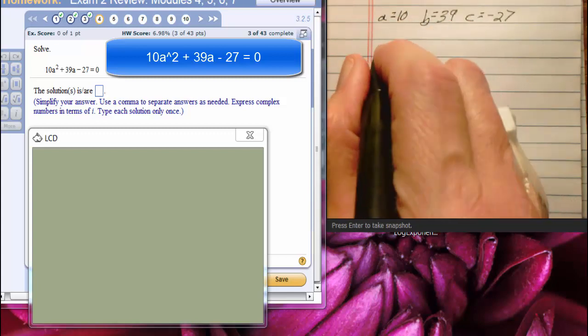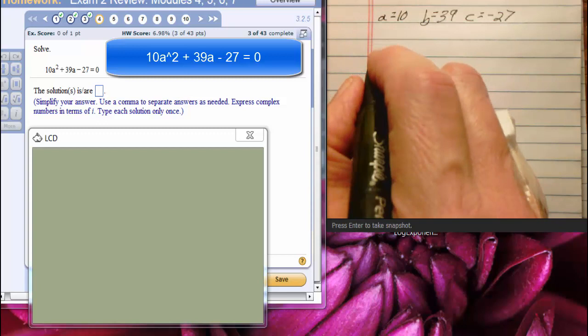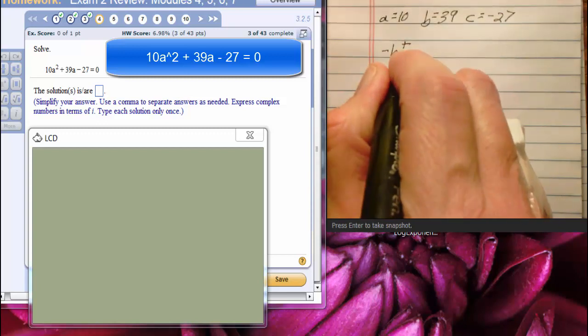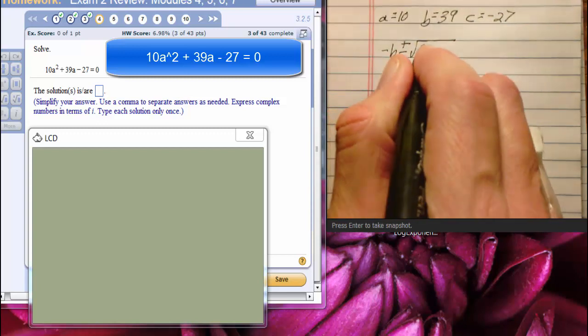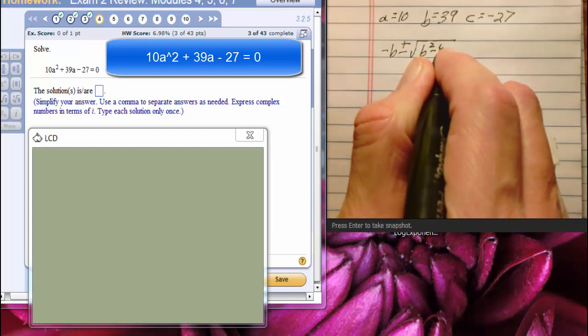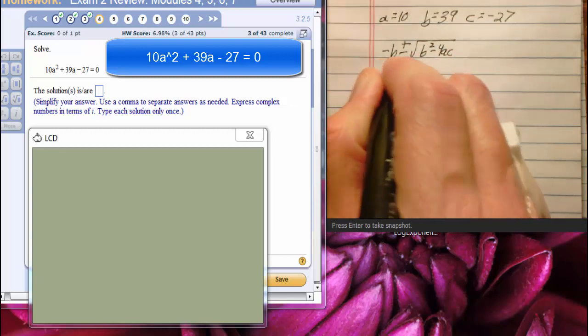So here we're looking for the letter A, but ignore that. We've got negative B plus or minus the square root of B squared minus 4AC all over 2A.